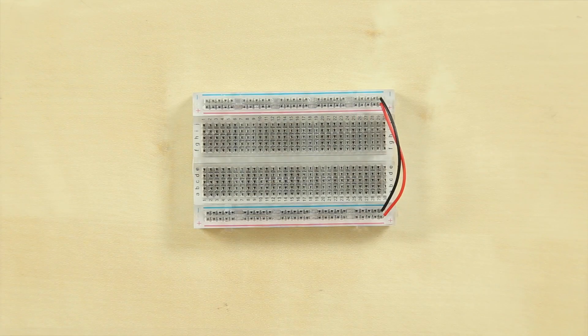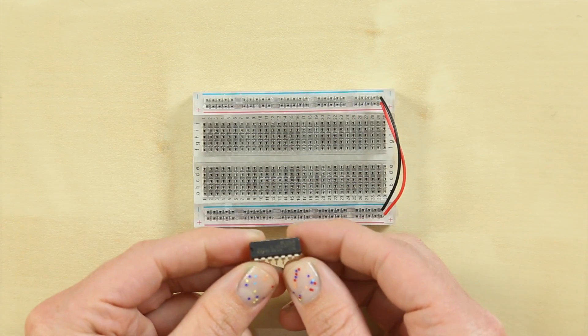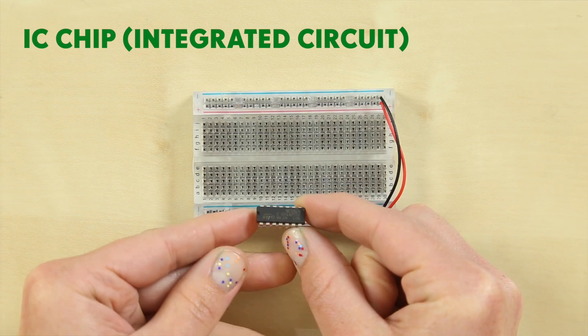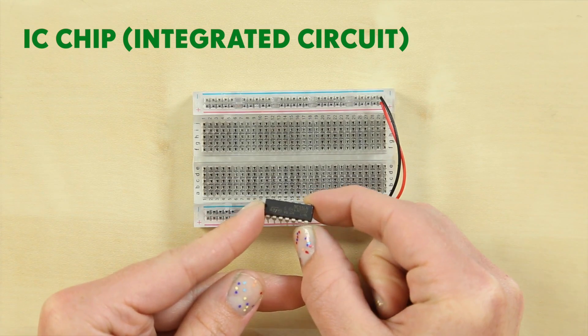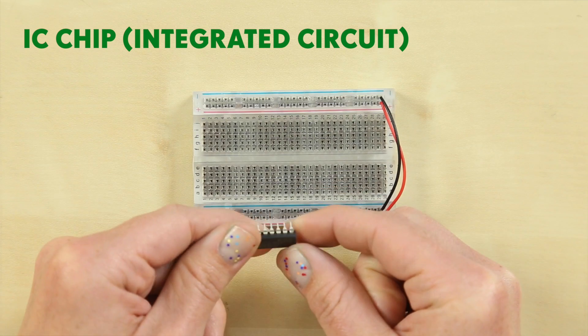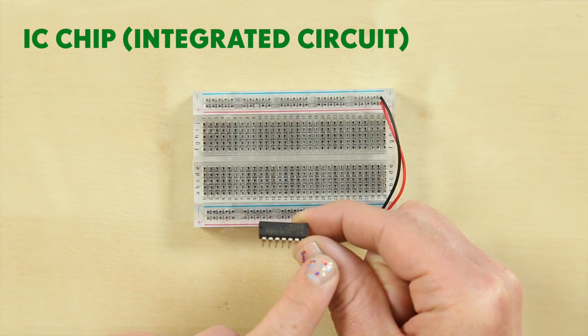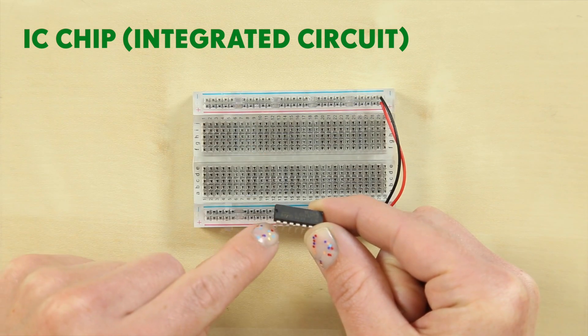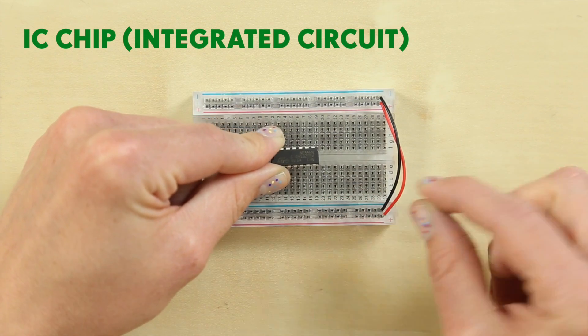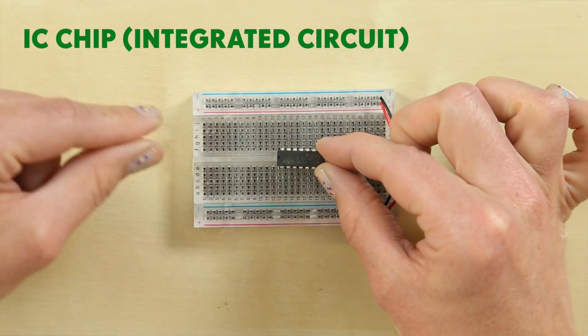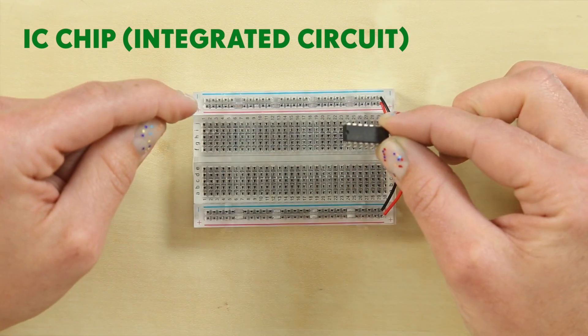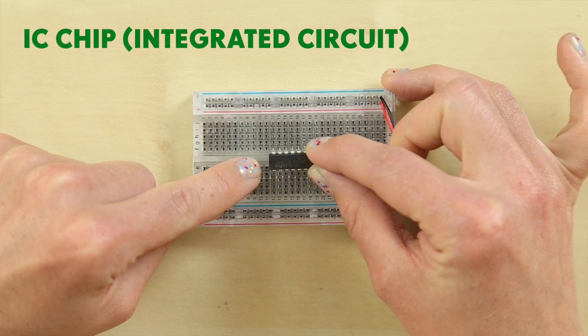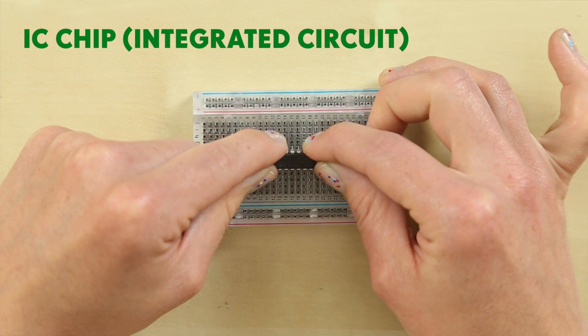Next we come to our second component: our chip or integrated circuit. This is an IC 556 timer. It has pins all the way around and these are numbered 1 through to 7 and then 8 through to 14. The notch is where the 1 starts. Place the IC over the center of your breadboard or gutter. It's called a gutter because no power gets through. It's going to form a bridge right over the middle.